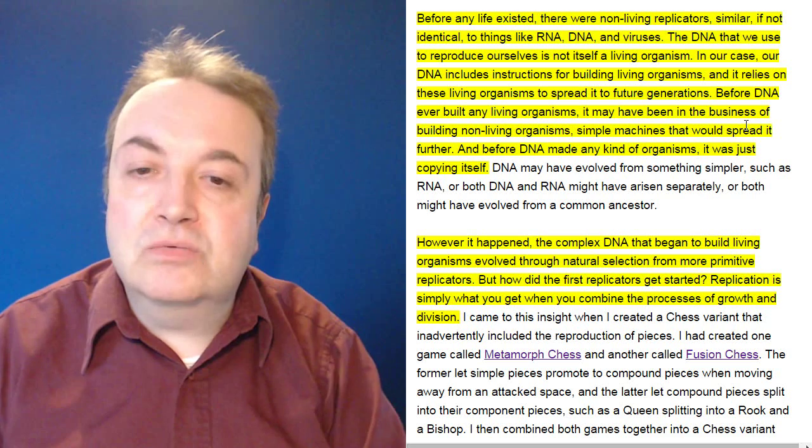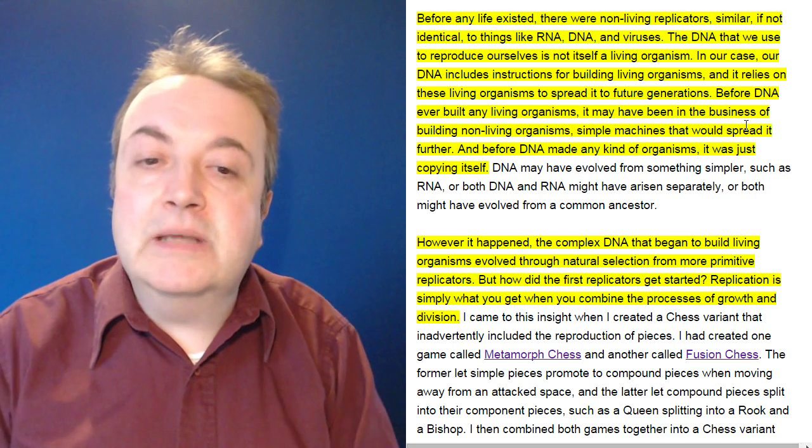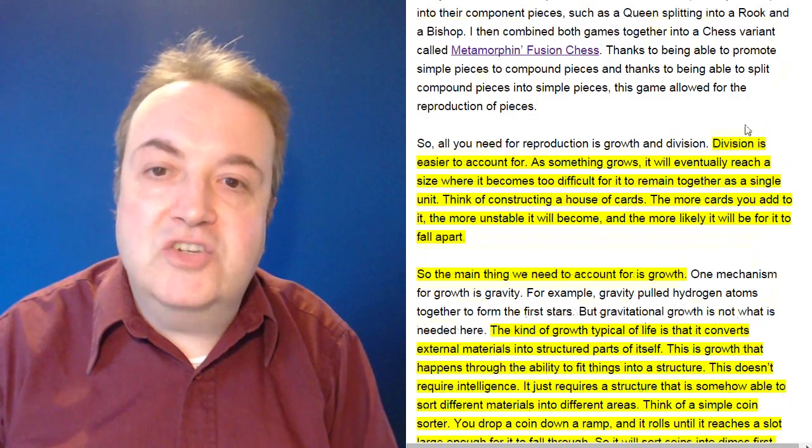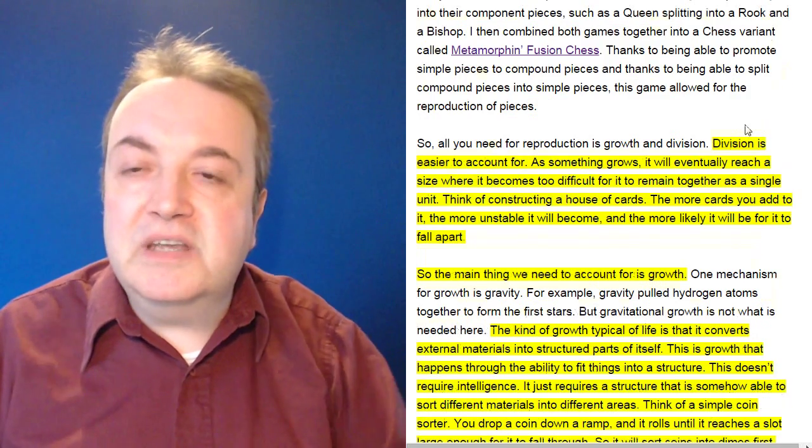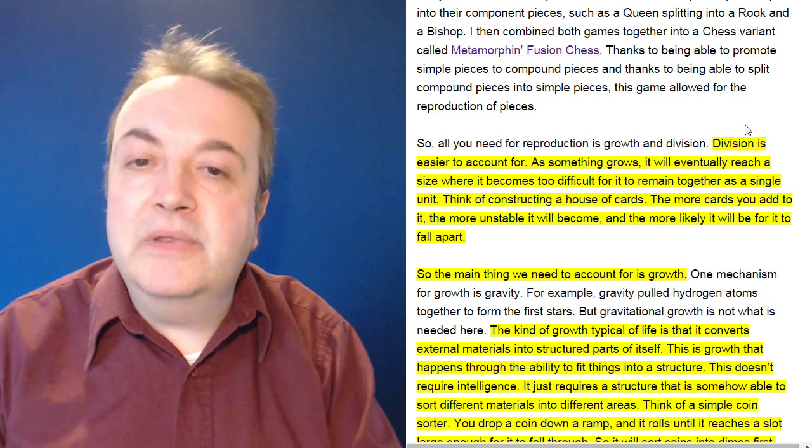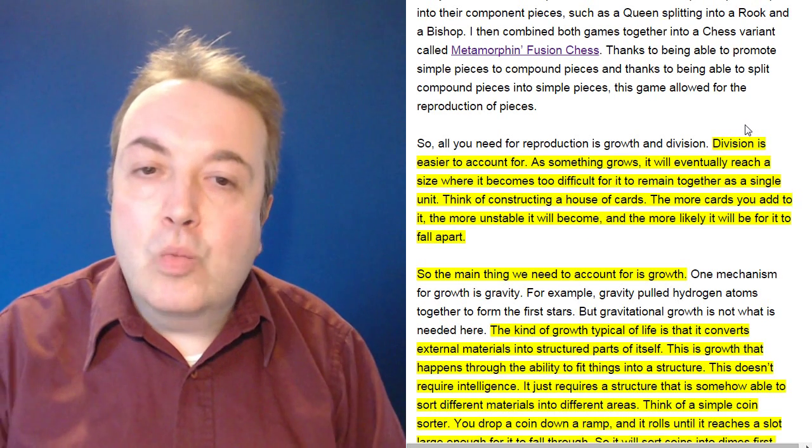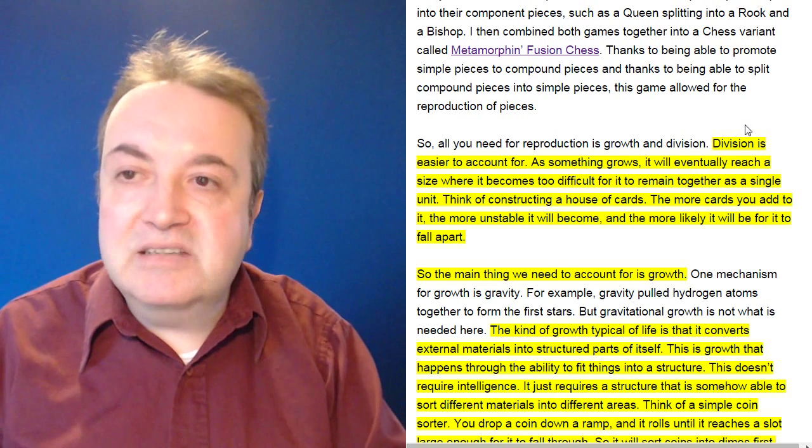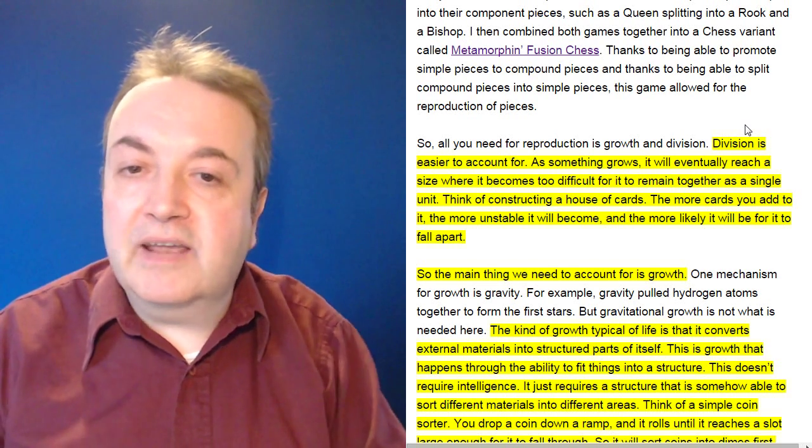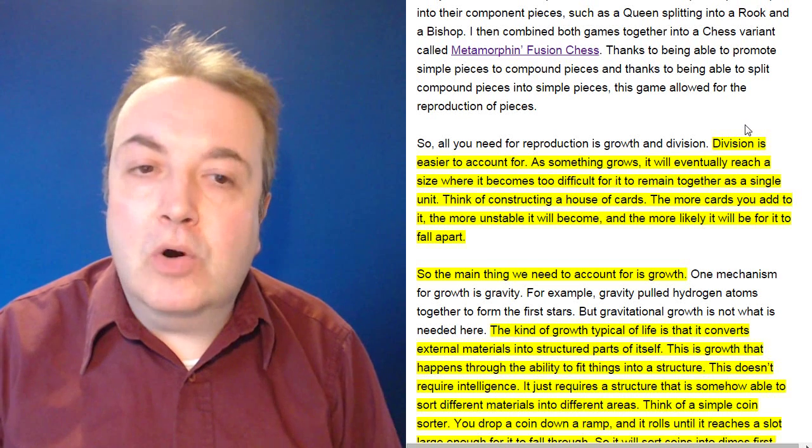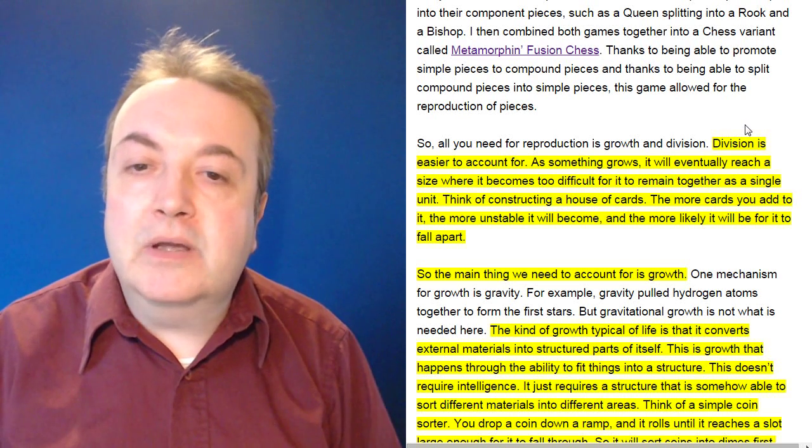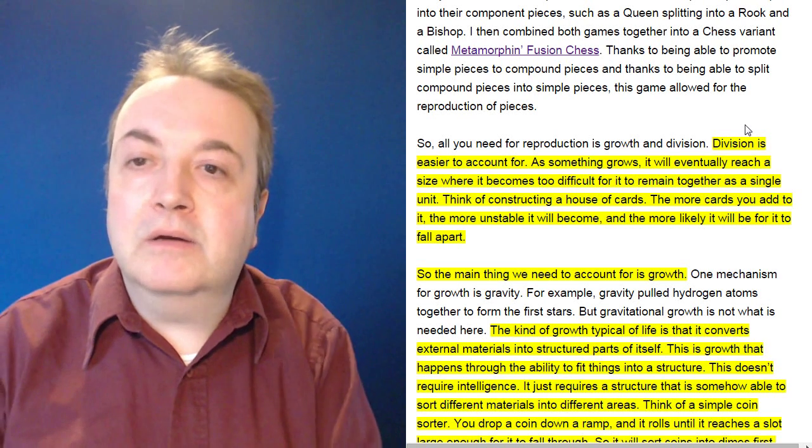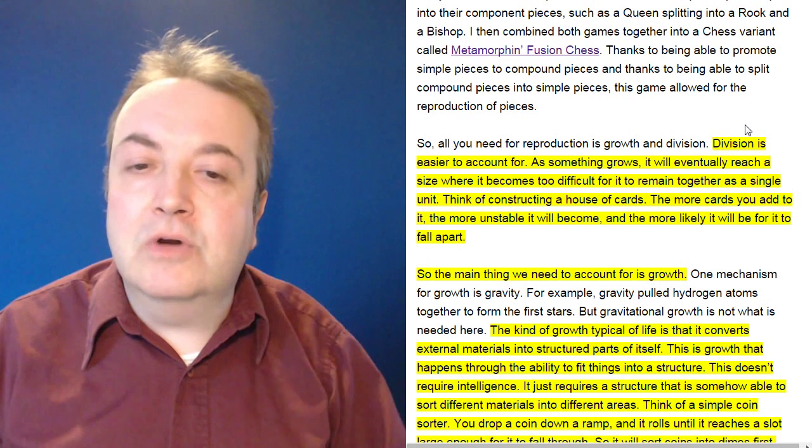But how did the first replicators get started? Replication is simply what you get when you combine the processes of growth and division. Division is easier to account for. If something grows, it will eventually reach a size where it becomes too difficult for it to remain together as a single unit. Think of constructing a house of cards. The more cards you add to it, the more unstable it will become and the more likely it will be to fall apart.